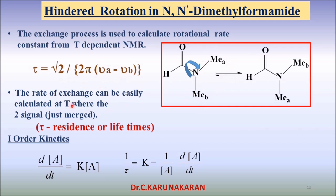Using temperature-dependent NMR, we can calculate the rotational rate constant for this hindered rotation process. We know that 1/τ (lifetime) is equal to the rate constant. Therefore, the rate constant for this rotational exchange process can be calculated using dynamic NMR as 1/τ.